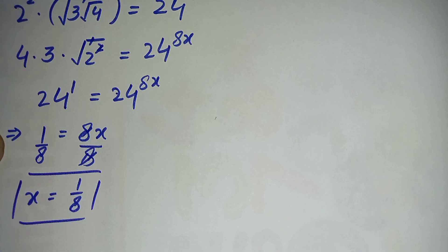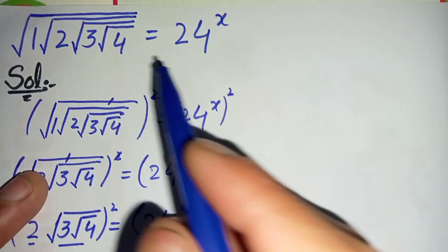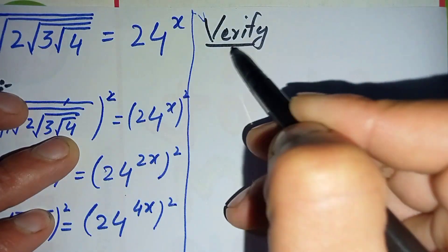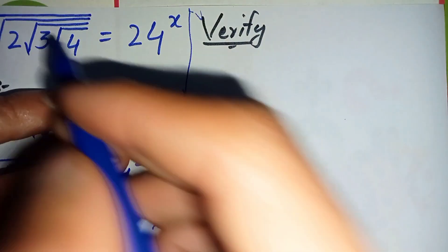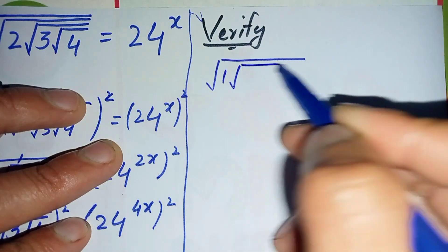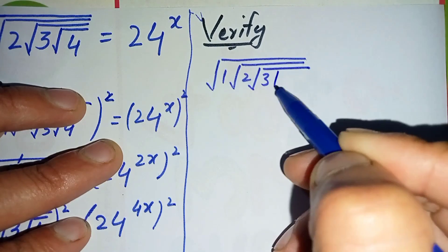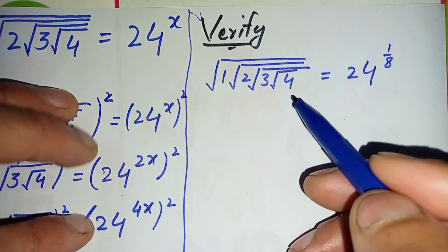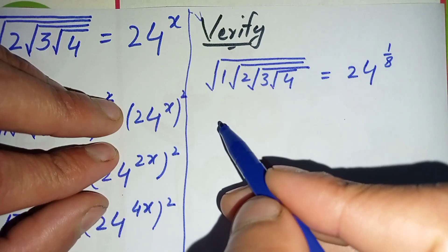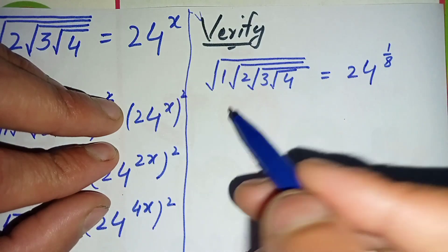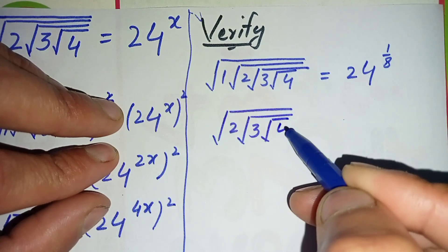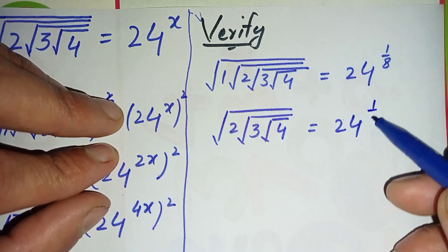So x equals 1/8 is our answer. Now we will verify that x equals 1/8 is the correct root of this problem. We rewrite the problem: square root of 1 times square root of 2 times square root of 3 times square root of 4 equals 24 raised to power 1/8. Since square root of 1 is 1, this becomes square root of 2 times square root of 3 times square root of 4 equals 24 raised to power 1/8.